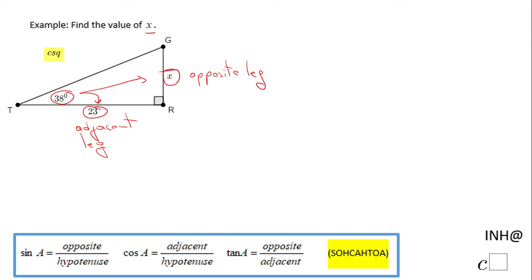Now looking at these trigonometric functions sine, cosine, and tangent, the only one that has opposite and adjacent is tangent of the angle. So we're gonna have tangent of 38 equal to...